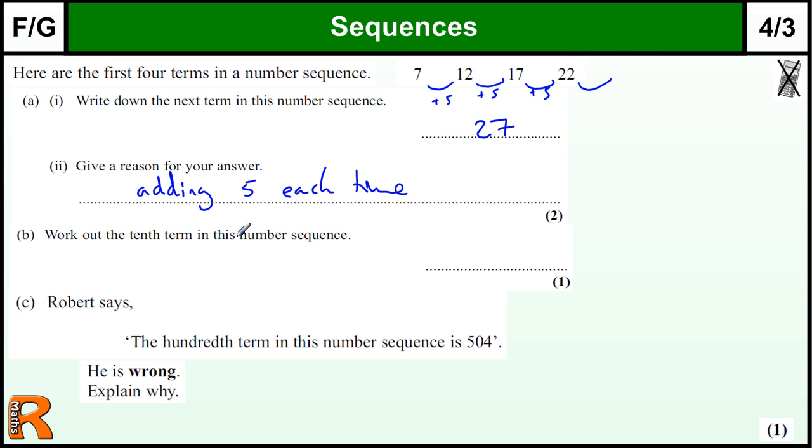Work out the 10th term in this number sequence. Well, you could just carry it on and count up, which is probably the safest way. 27, 32, 37, 42, 47, and so on until you get to the 10th one. 1, 2, 3, 4, 5, 6, 7, 8, 9, 10 would be 52.